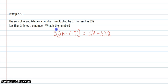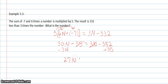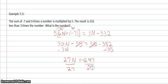Using the distributive property with 5 gives 30n minus 35 equals 3n minus 332. I get all n terms on one side and constants on the other by subtracting 3n and adding 35 to both sides, giving 27n equals 297. Wait — it's negative 332 on the right, so 27n equals negative 297. Dividing both sides by 27, n equals negative 11.